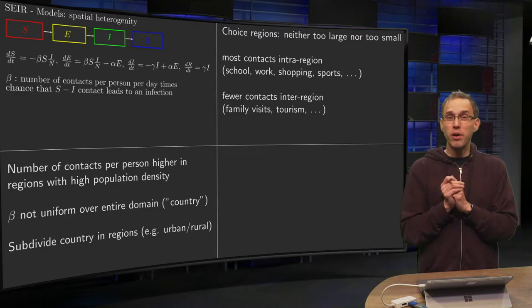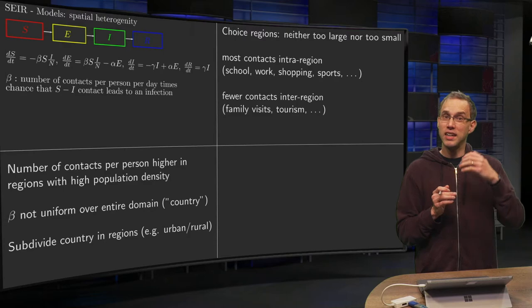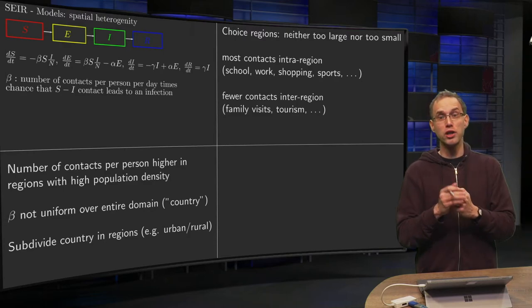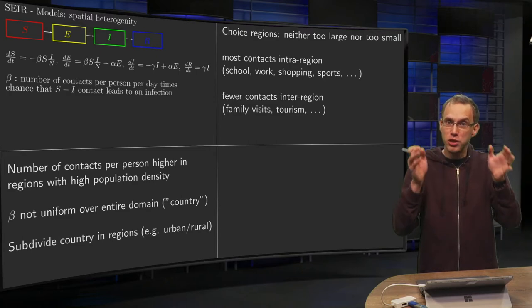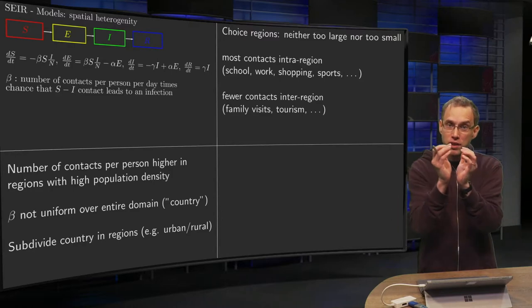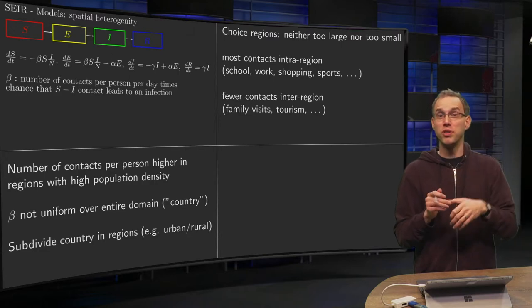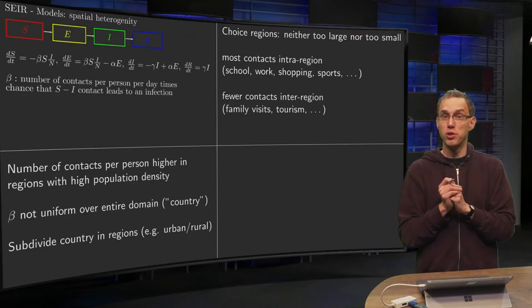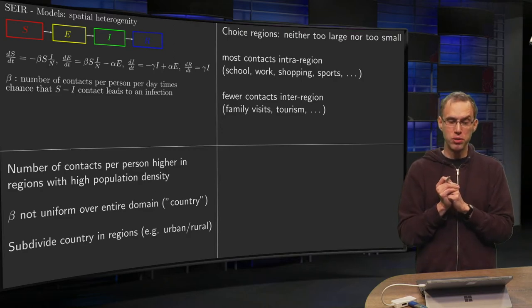If you subdivide your country, you shouldn't take your regions neither too large nor too small. Because if you take your regions too large, then your beta won't be constant anymore. And if you take your regions too small, at a certain point you are just looking at single individuals and your continuity model does not hold anymore.